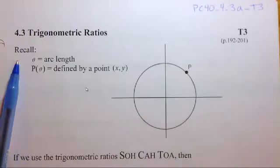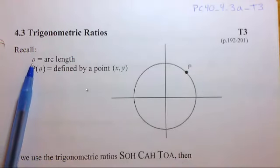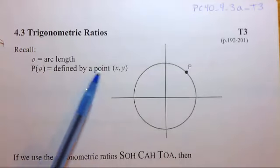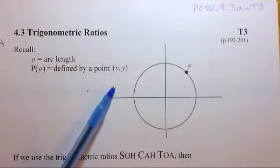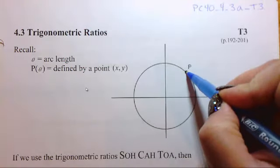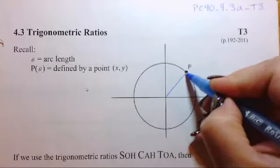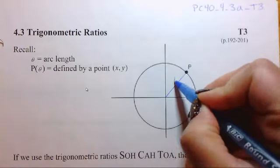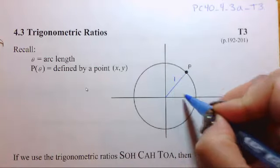Now, in this one here, I want you just first to recall that theta is referring to the arc length. P theta is defined by a point where it's in x and y coordinates. And over here, we've got our P. This is sitting on our unit circle. So, this line from here to here is going to be of length 1. That refers to the radius.